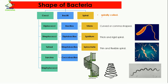Then comes the spiral bacteria. Spiral bacteria are spirally coiled, just like a spiral staircase where a main rod is present and a staircase moves around it. There are three more spiral-shaped bacteria. The first is vibrio — vibrio bacteria are curved or comma-shaped, with a slightly curved structure.